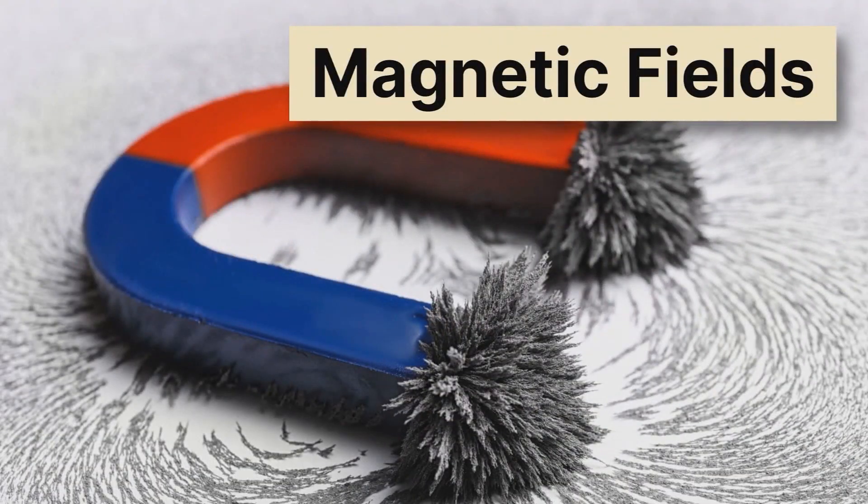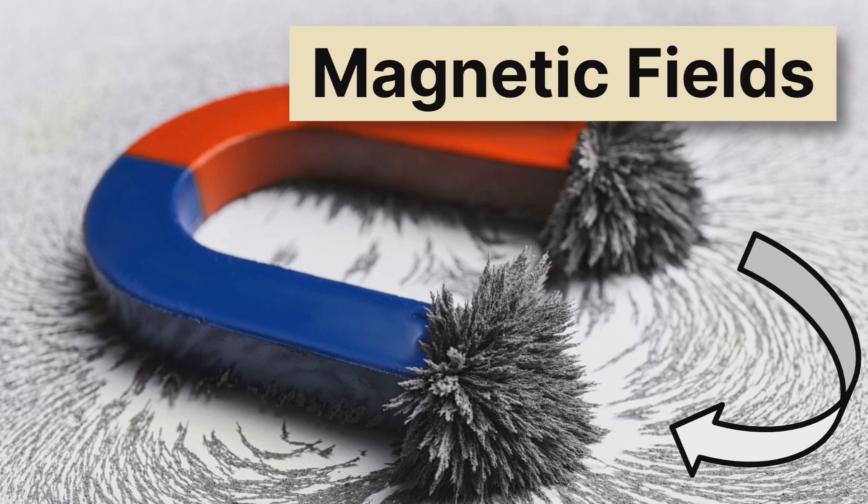Then we have magnetic fields. Notice all these metal filings that are being pulled towards this magnet. How many metal filings are piling up at different spots is a good indication of its magnitude, that is, how strong the field is. And the curved shape of those magnetic filings tells us about the direction. So magnetic fields are also a vector.